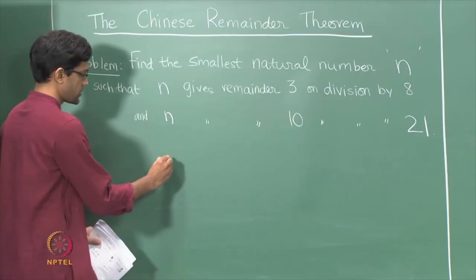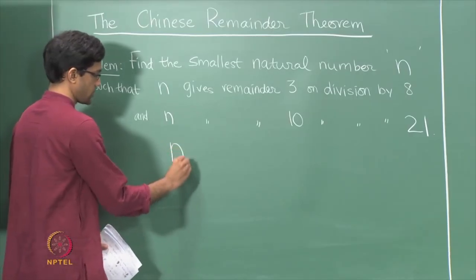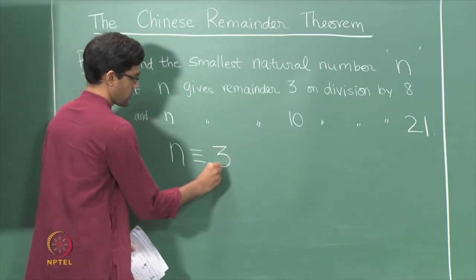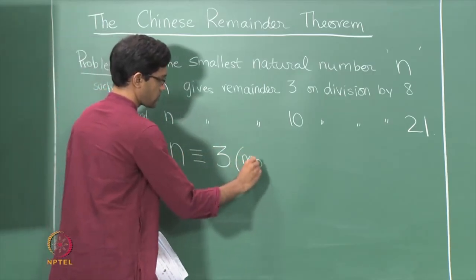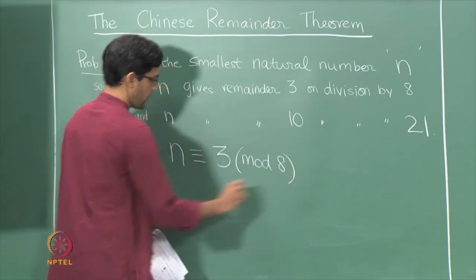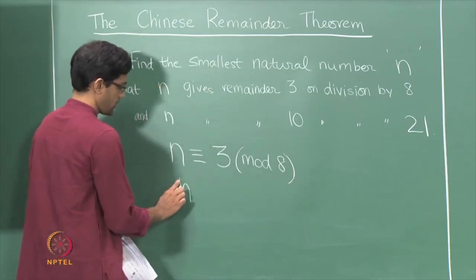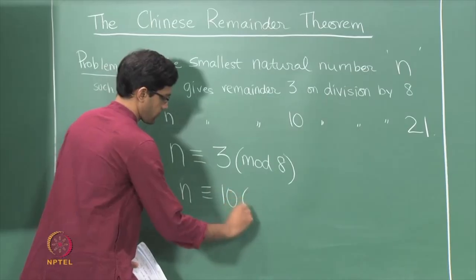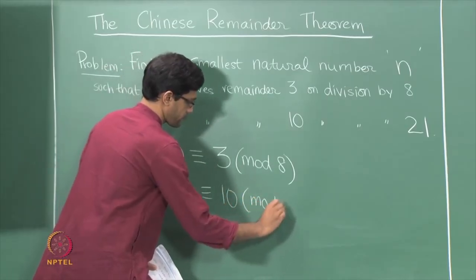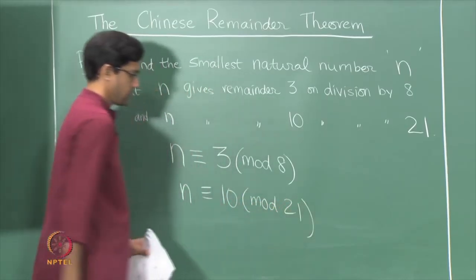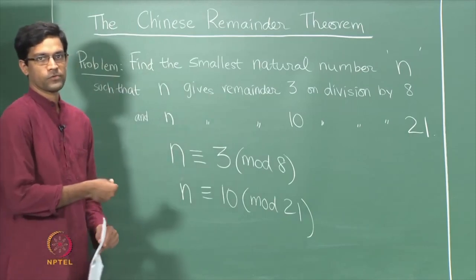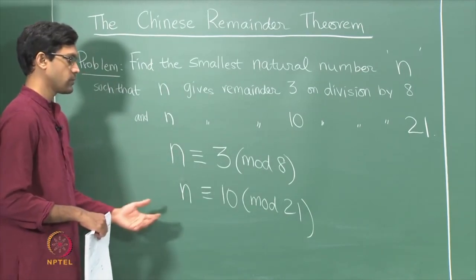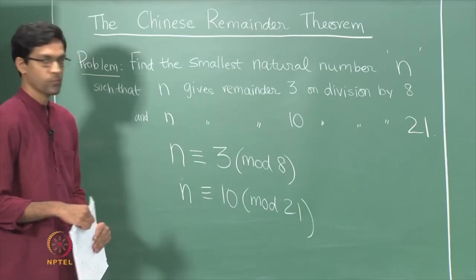Let us rewrite this using our notation of congruences. The first condition becomes n is congruent to 3 modulo 8, and the second condition is that n is congruent to 10 modulo 21. So this is really a system of simultaneous congruences — we are trying to solve 2 congruences which need to be simultaneously true.